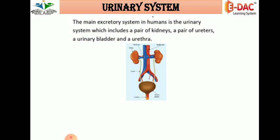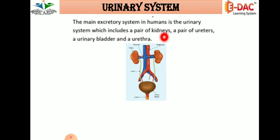Today's topic is the urinary system. The main excretory system in humans is the urinary system. The main part of the excretory system is the urinary system, which includes a pair of kidneys. This is the urinary bladder and this is the urethra. This is a pair of ureters, the urinary bladder, and a pair of ureters. Is that clear?